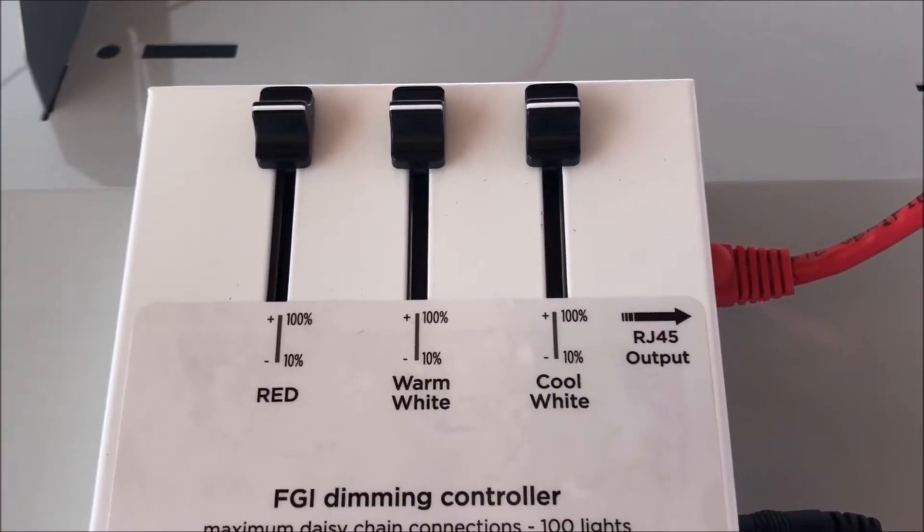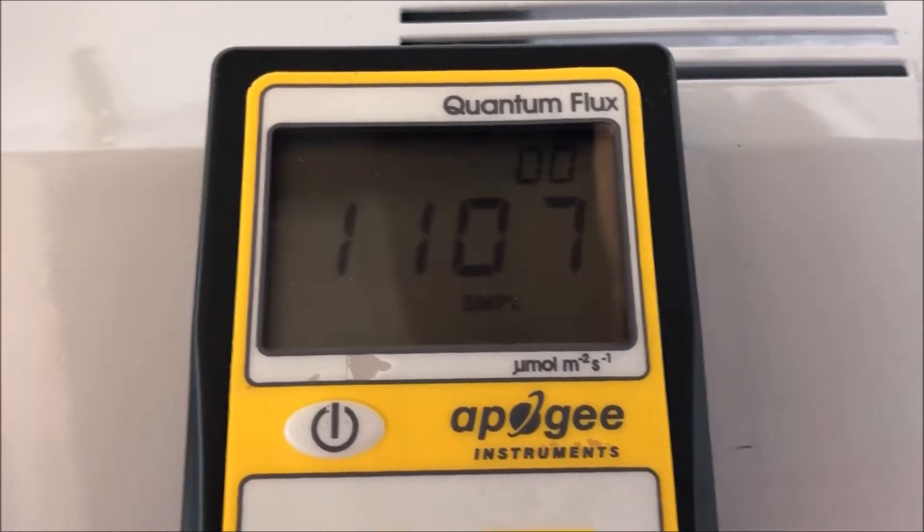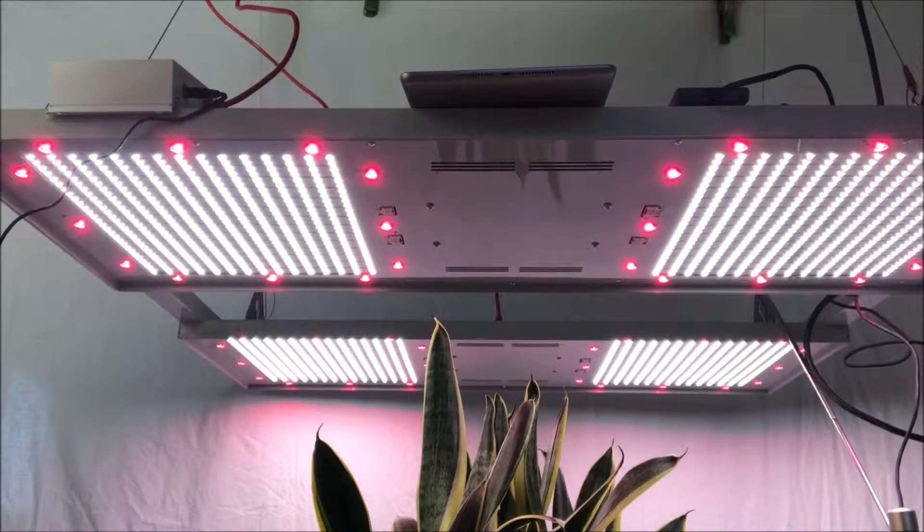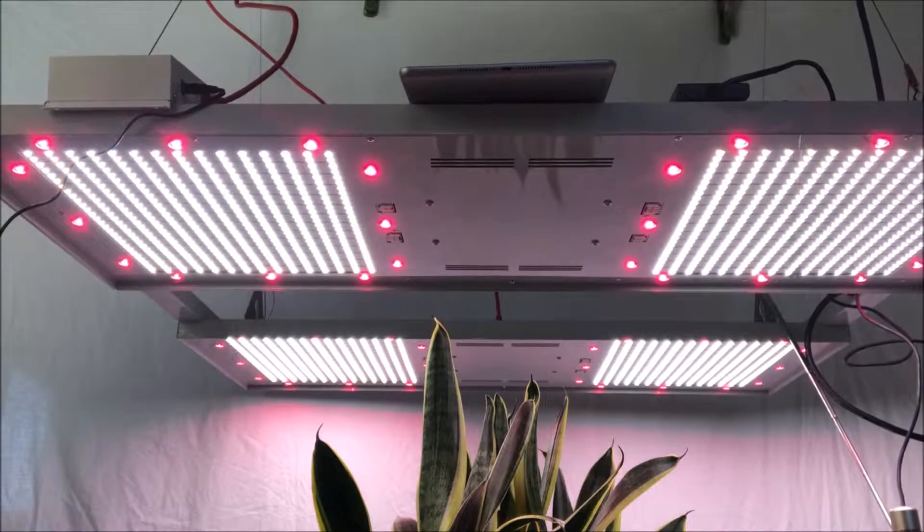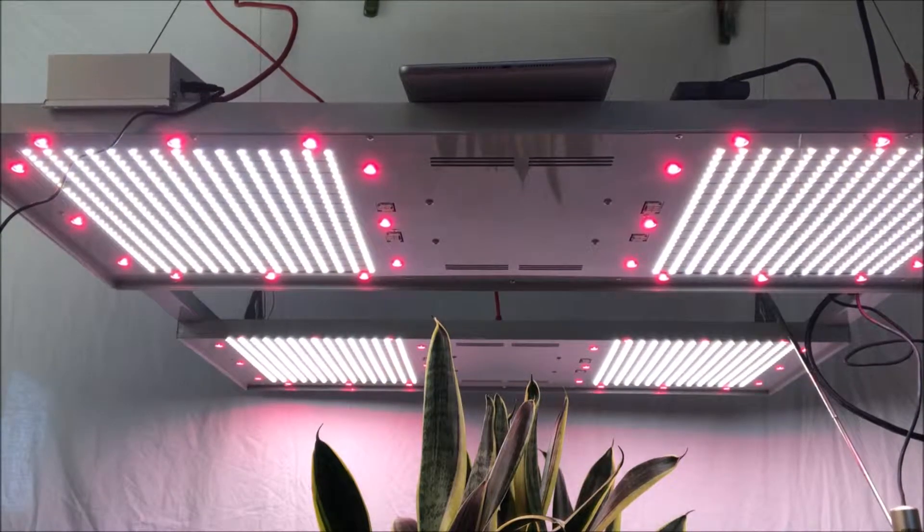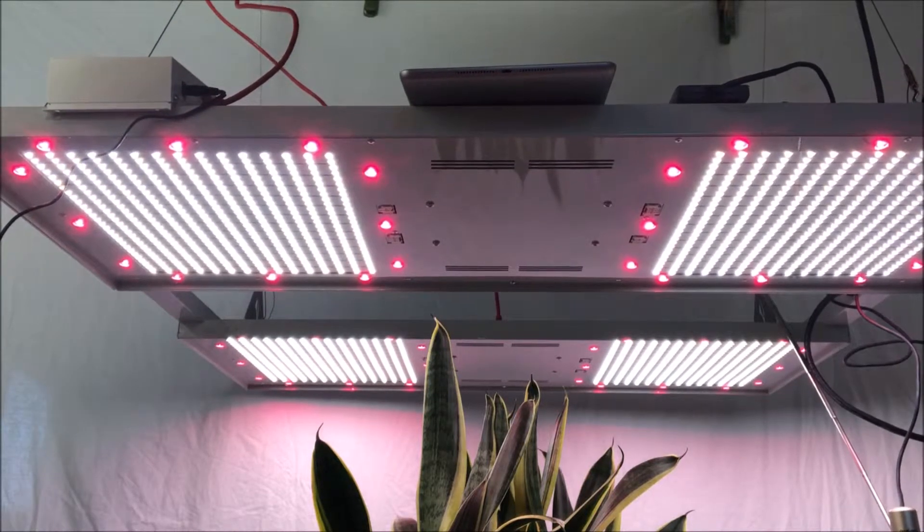And so here we are back to 100% on all channels and back to 1100 PPFD on the PAR meter. So thanks for tuning in with Forever Green Indoors and learning a little bit about the FGI controller, how it works together with our light panel 700, and happy growing.